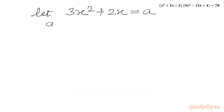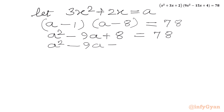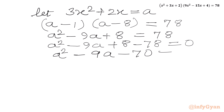Let us multiply: (a - 1)(a - 8) = a² - 8a - a + 8 = a² - 9a + 8 = 78. Taking all terms to the left-hand side: a² - 9a + 8 - 78 = 0, which gives us a² - 9a - 70 = 0.